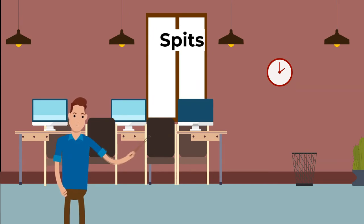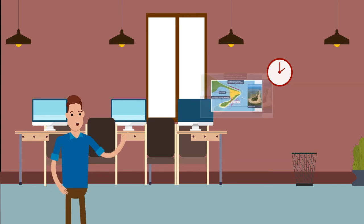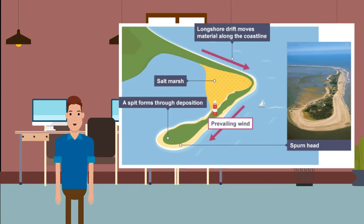The next topic is spits. Spits are also created by deposition. A spit is an extended stretch of beach material that projects out to sea and is joined to the mainland at one end. Spits are formed where the prevailing wind blows at an angle to the coastline, resulting in longshore drift. An example is Spurn Head, found along the Holderness Coast in Humberside. Its development: 1. Longshore drift moves material along the coastline; erosion occurs further back along the coast and prevailing winds help transport material. 2. Deposited material starts to build up where the coastline changes direction. 3. A spit starts to form. 4. Over time the spit grows and develops a hook if wind direction changes further out. 5. Waves cannot get past the spit, creating a sheltered area where silt is deposited and mudflats or salt marshes form.